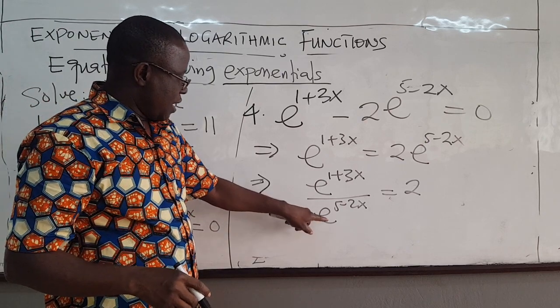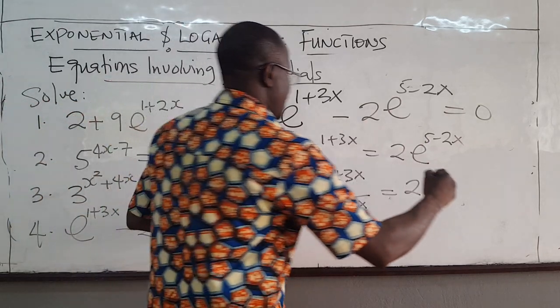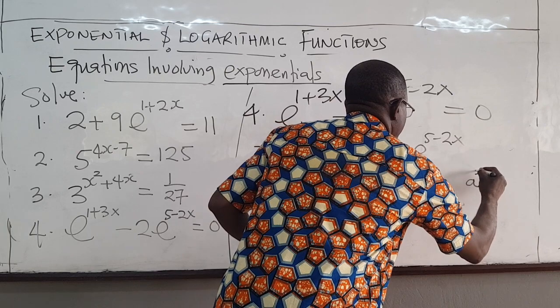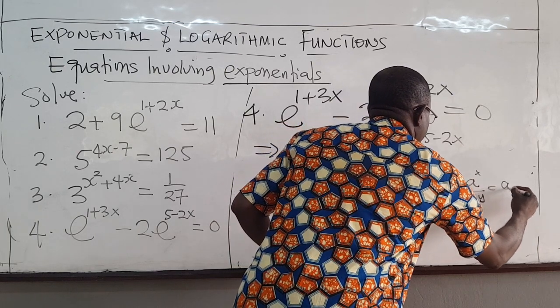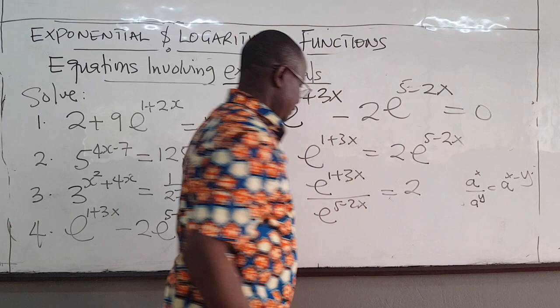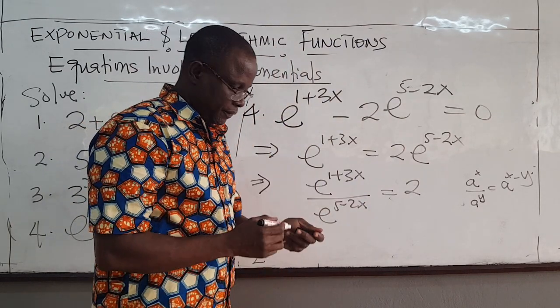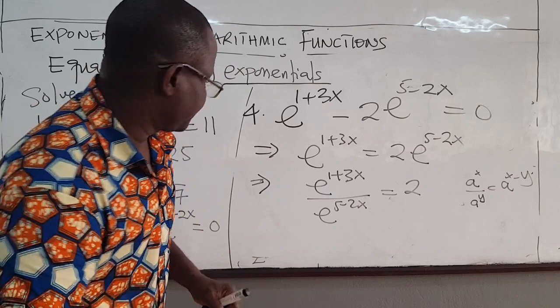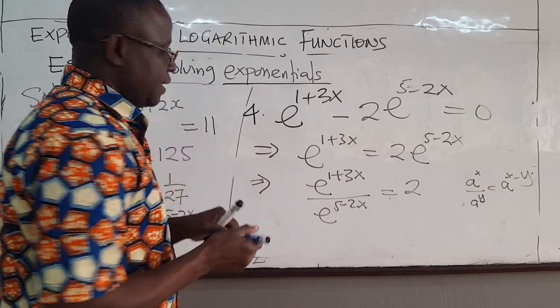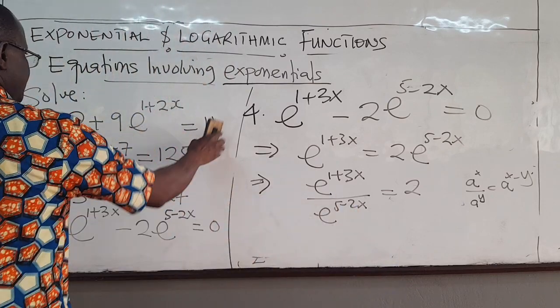This, we can write this. Look, if I have a^x over a^y, this is the same as a^(x-y). So if I take this up, we will subtract this. So we get, let me get rid of this.